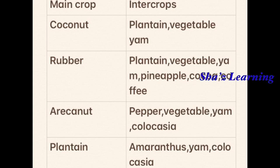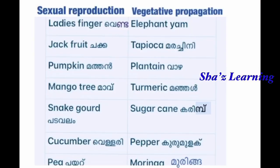So to recap: sexual reproduction and vegetative propagation are two types. Sexual reproduction means the seed is germinated. Examples: ladies finger, bhindi, jackfruit, pumpkin, mango tree, snake gourd, cucumber, and bitter gourd.